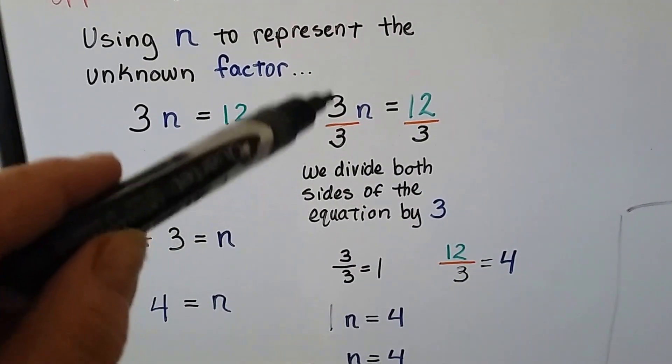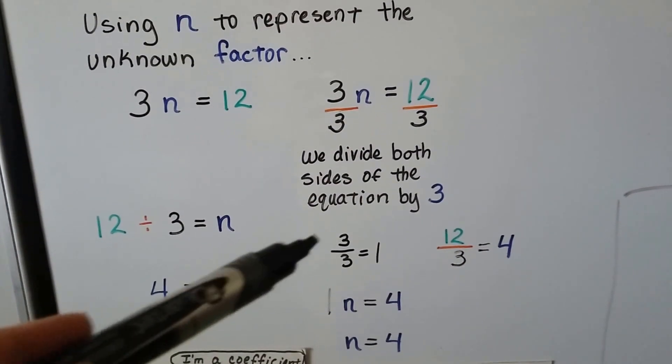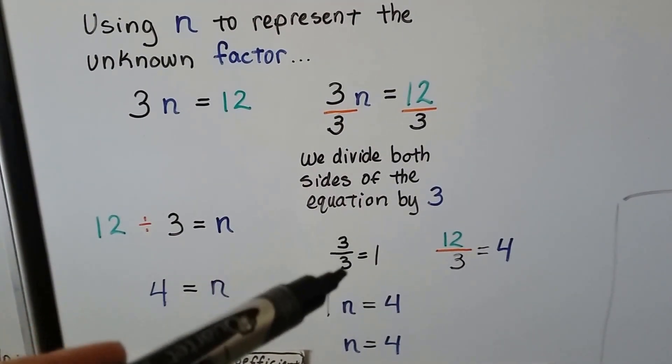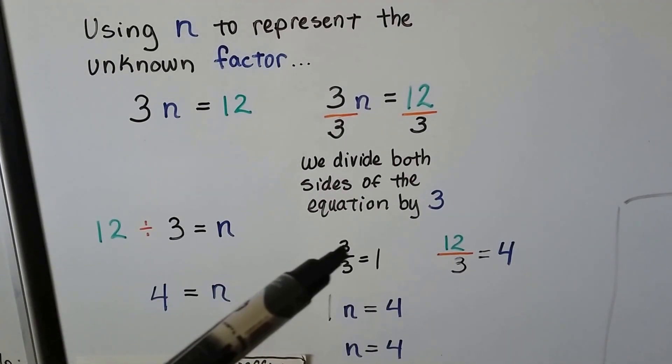Well, we end up with 3 over 3n equals 12 thirds. Well, if you have 3 parts of a candy bar that is cut into 3 parts, you have all the parts of the candy bar. You have 1 whole candy bar.